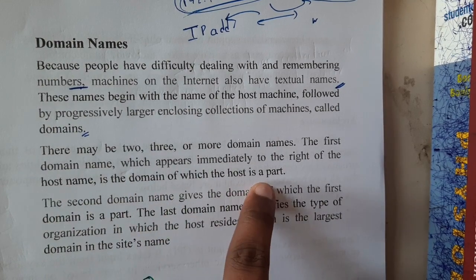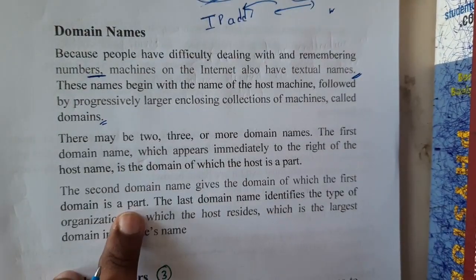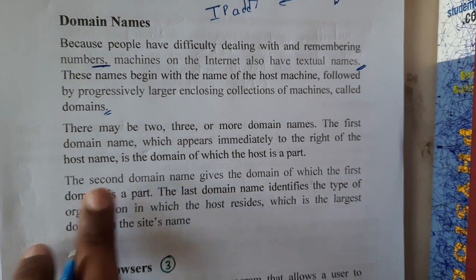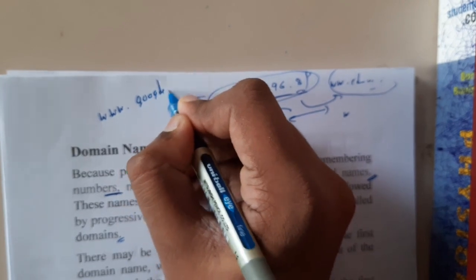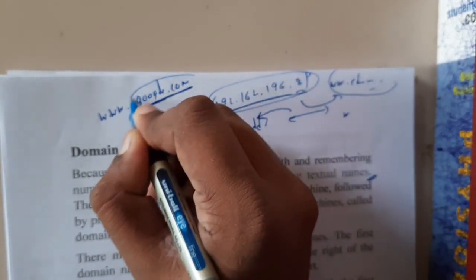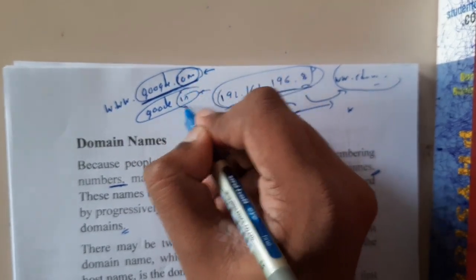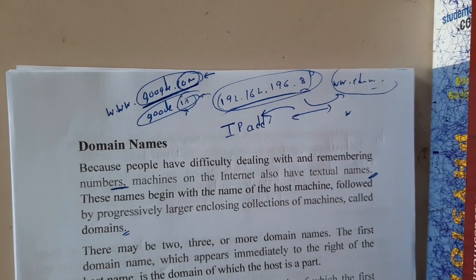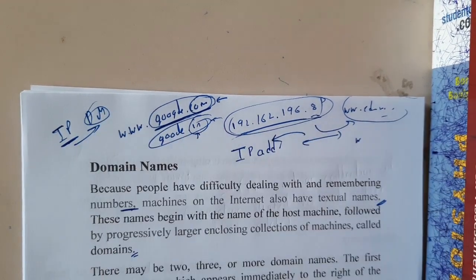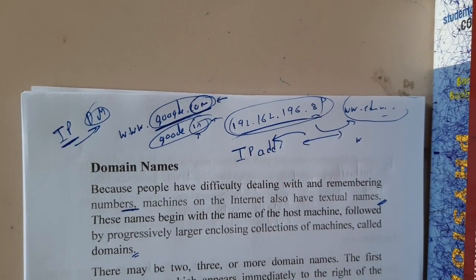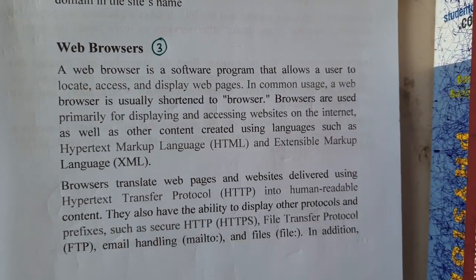For www.google.com, we can say google is the domain name - along with .com. We can also have google.in, which is for India, whereas .com is for commercial use. These are called extensions. I hope everyone got a clear idea on what is IP address and why we use domain names instead - because they are easy to remember. In the next lecture we will be starting with web browsers. Thank you for watching.